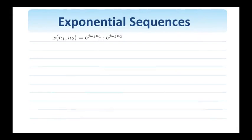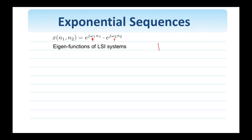So let us look at the specific details of the complex exponential. Complex exponentials are very important signals in digital signal processing. Here we see a two-dimensional complex exponential at frequencies omega 1 and omega 2. They're important for at least two reasons. The first one is that they're eigenfunctions of linear and spatial invariant systems. Don't worry about the fine details at this point — we'll talk about it later.